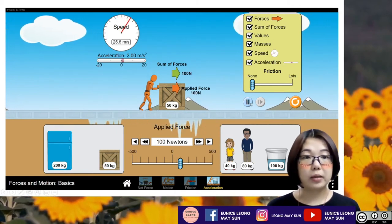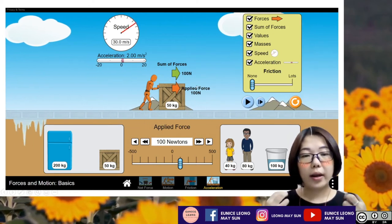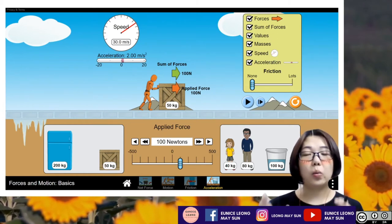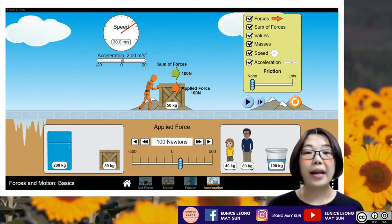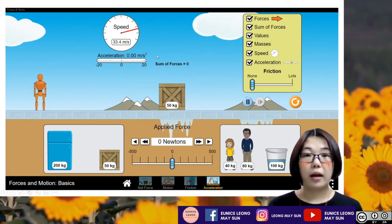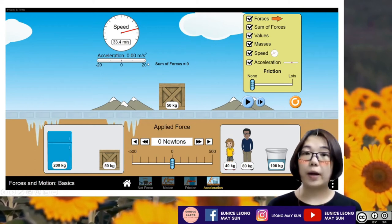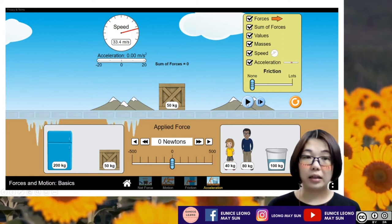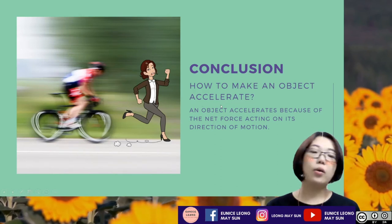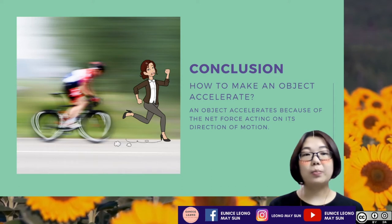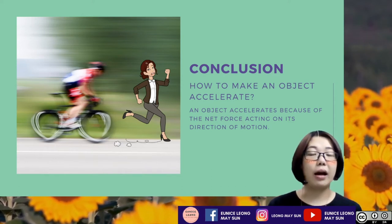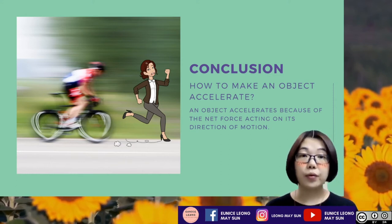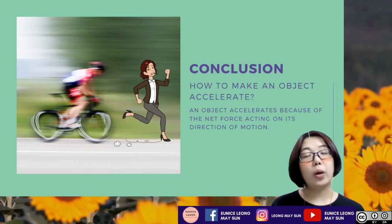If I exert even more force, the acceleration becomes 2 meters per second squared and the speed keeps increasing. When I apply force constantly — I keep applying force onto the crate — only then will it have an acceleration value. The speed will keep increasing. But if that force is removed, the acceleration value goes back to 0 and the speed becomes constant at 33.4 meters per second.